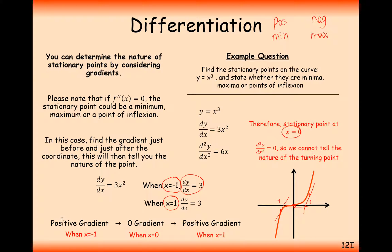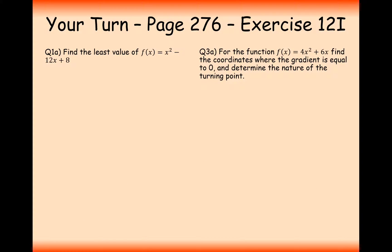If the gradient went from negative to zero to negative, it would be a point of inflection in the opposite direction. If it went from positive to zero to negative, it would be a maximum point. If it went from negative to zero to positive, it would be a minimum point, much like an x-squared curve. The key feature is: when your second derivative equals zero, you cannot tell which type of turning point it is — you must test the gradient either side of the x value.